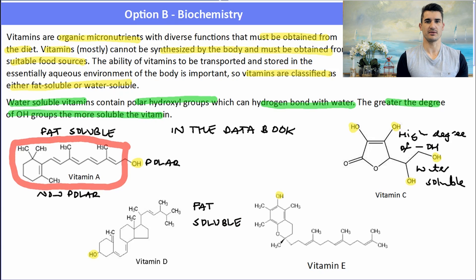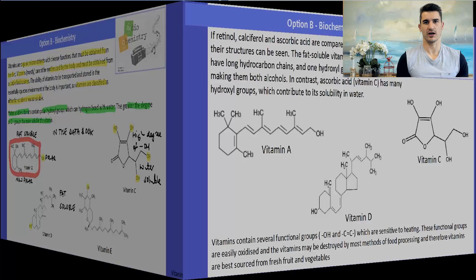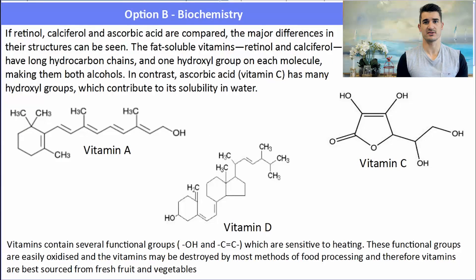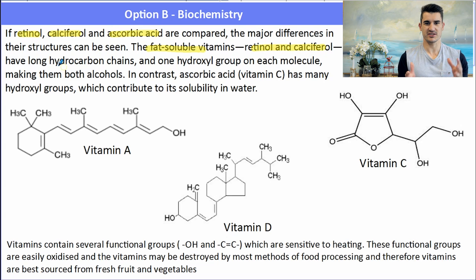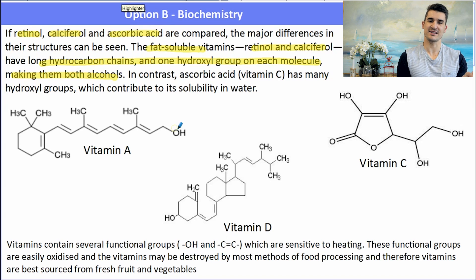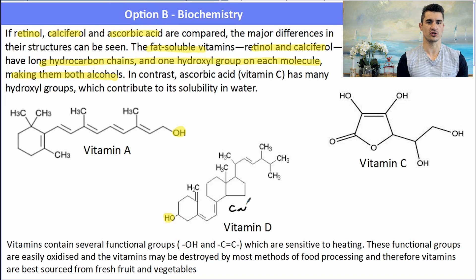Vitamin E also has one polar hydroxy group while the rest is non-polar. So if we compare retinol (vitamin A), calciferol (vitamin D), and ascorbic acid (vitamin C), the major difference in their structures can be seen. Vitamin A and vitamin D are fat-soluble because they only contain one hydroxy group, which makes them alcohols — hence the suffix '-ol'. In contrast, vitamin C, ascorbic acid, has a number of different hydroxy groups, so it is very soluble in water.